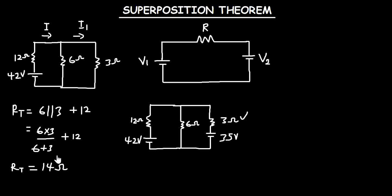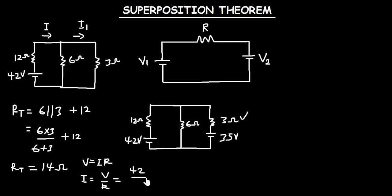Now that we know the effective resistance, we can calculate for the total current in this circuit. From Ohm's law, voltage equals current times resistance, so current equals voltage over resistance. That will be 42 volts over 14 ohms, which gives us a total current of 3 amperes.